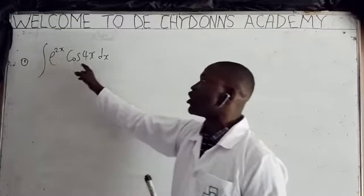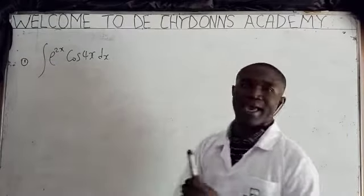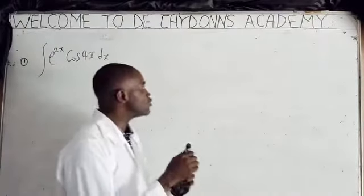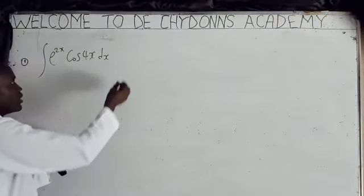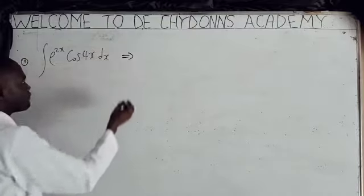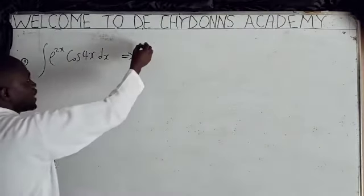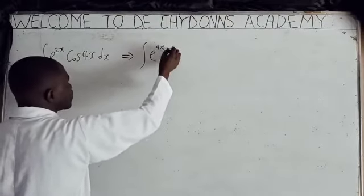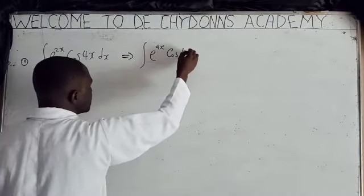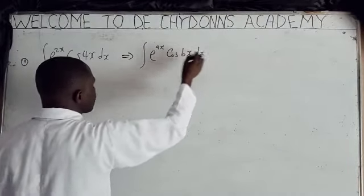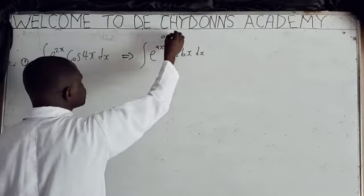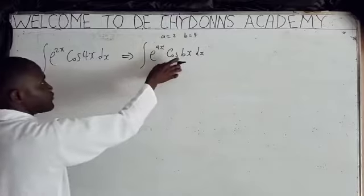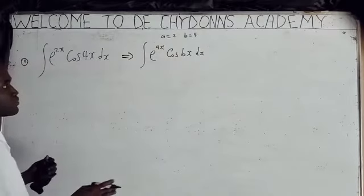Integrate e^(2x) cos(4x) dx. How do we integrate this type of question? We can use the general formula: integrate e^(ax) cos(bx) dx, where a equals 2 and b equals 4. Let's see how we can integrate this.